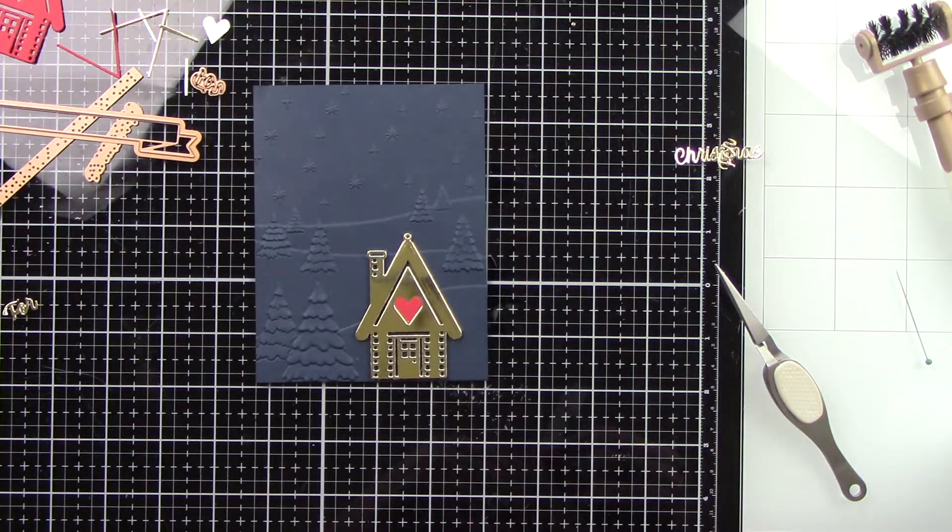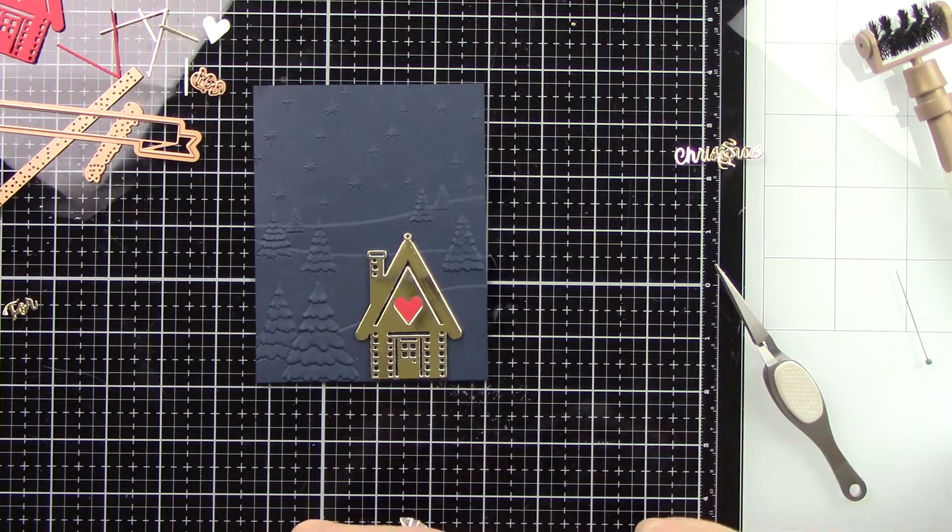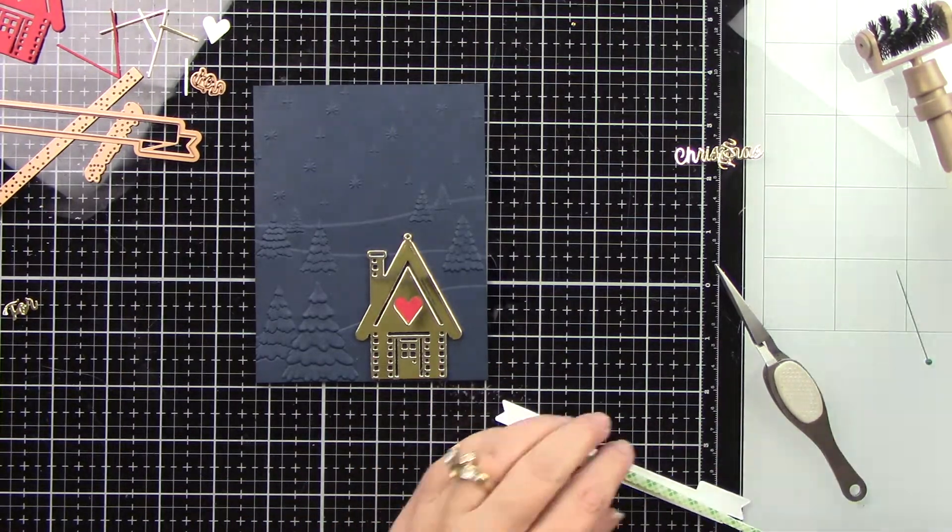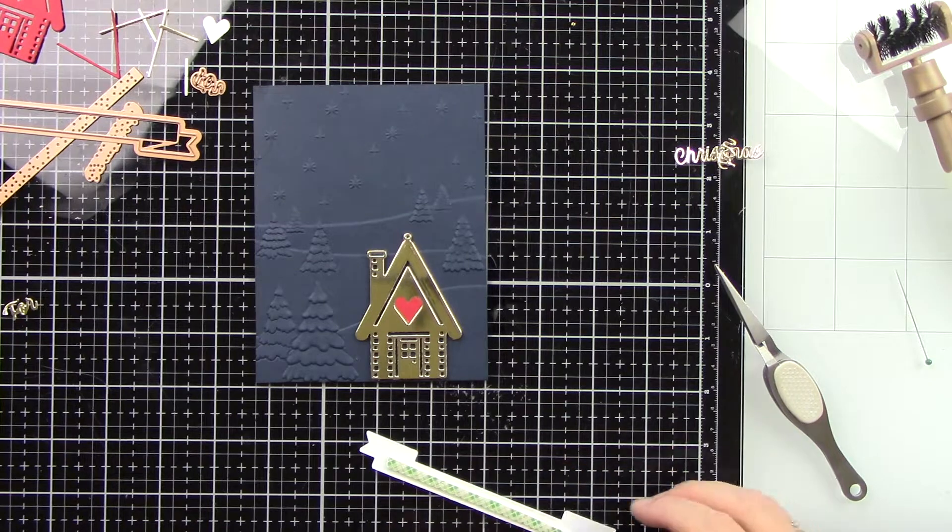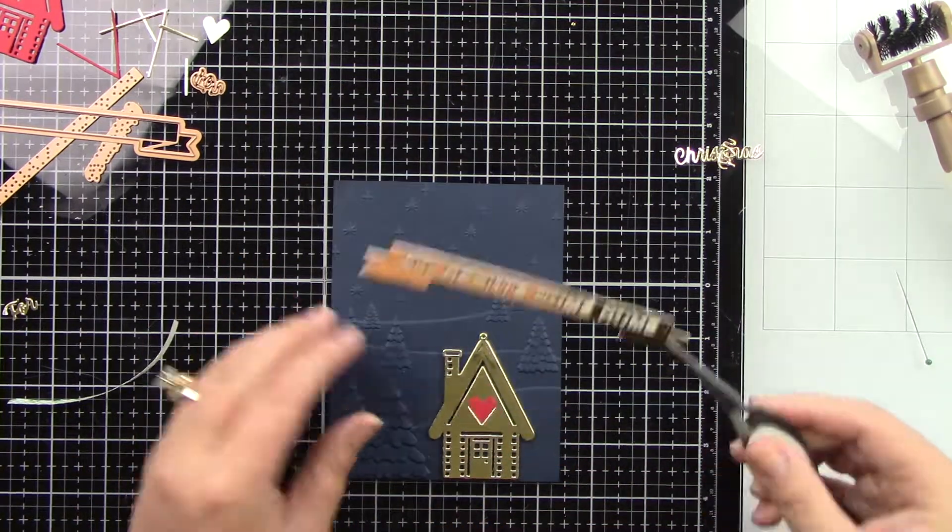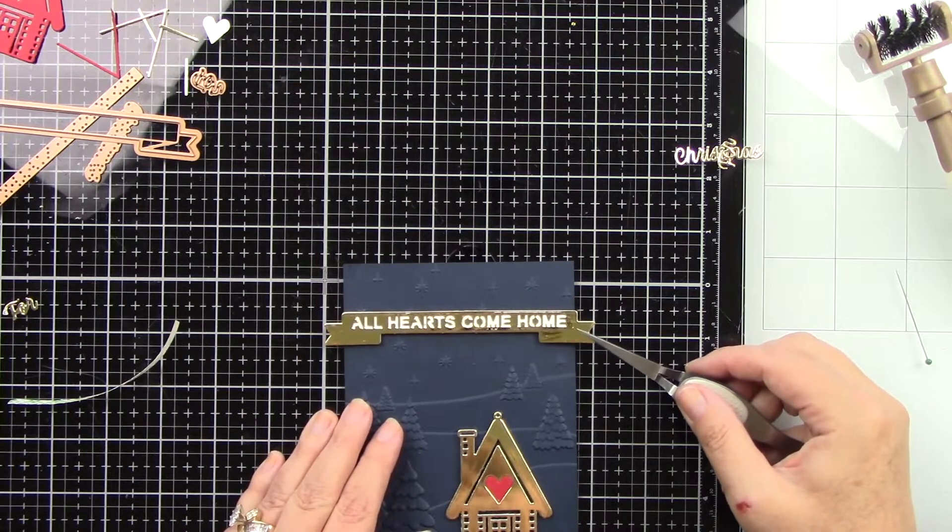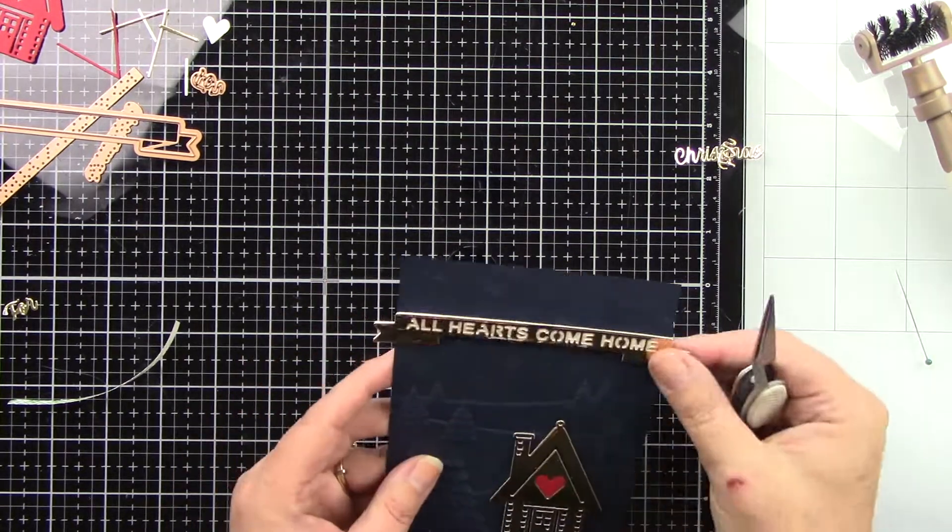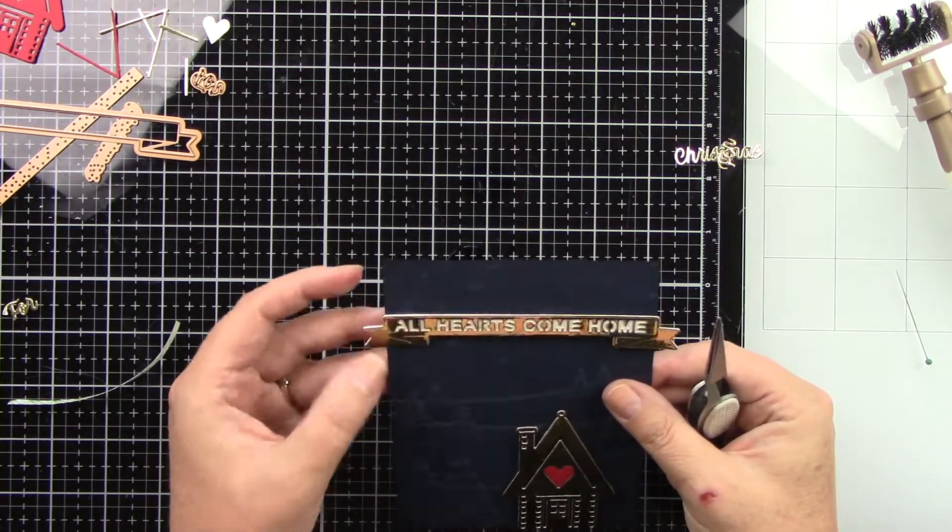Now this is also going to have foam tape. You guys know I love my sentiments to have dimension. So I trimmed down a piece and I'm just going to center that in there and we can pop this up at the top. And then we can get the other little sentiments in place. So the whole sentiment says all hearts come home for Christmas, which I think is really super sweet.